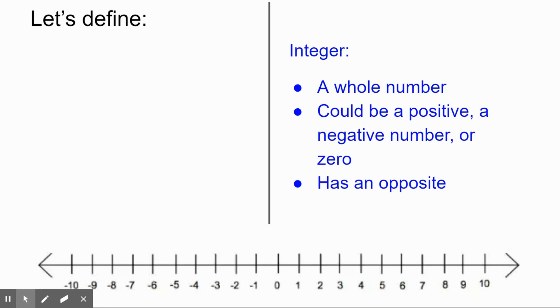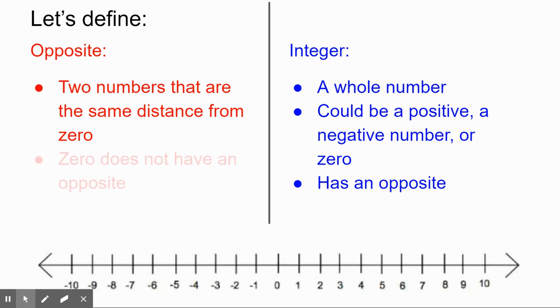Now, what is an opposite? Opposites are two numbers that are the same distance from zero. The only integer that doesn't have an opposite is zero, because it's at zero already. It can't be the same distance from itself.